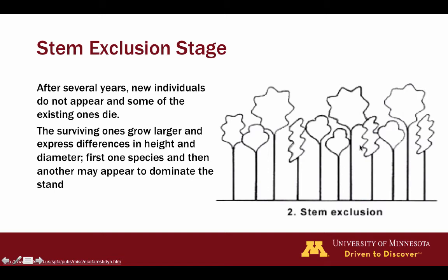That begins to change when we move into the stem exclusion stage. After several years, we see no new individuals appearing and some existing ones dying, as growing space is no longer available. Trees that were first to appear, on a better site or microenvironment, or with superior genetics, are able to maximize their use of growing space, while other individuals cannot efficiently use that growing space and die.